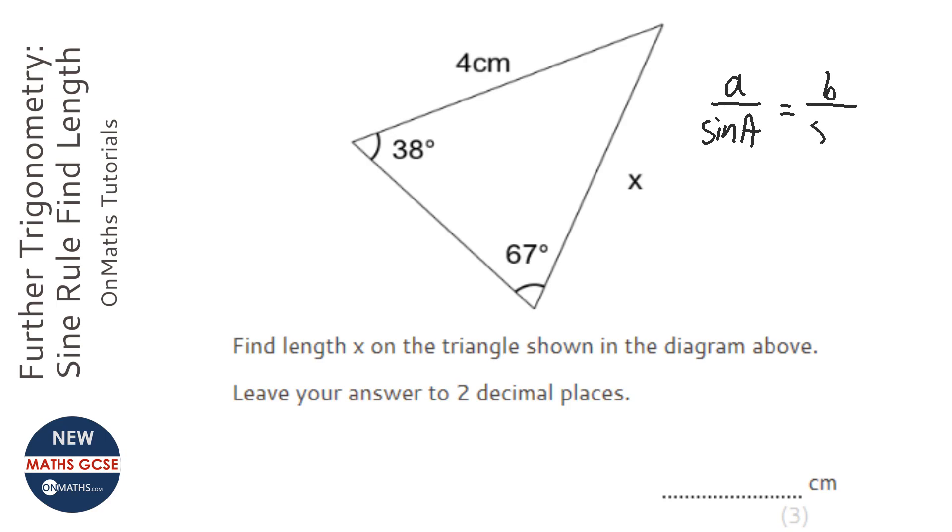Equals little b over sine b. So I label the unknown length as little a and the opposite angle as big A, and they always have to be opposite.